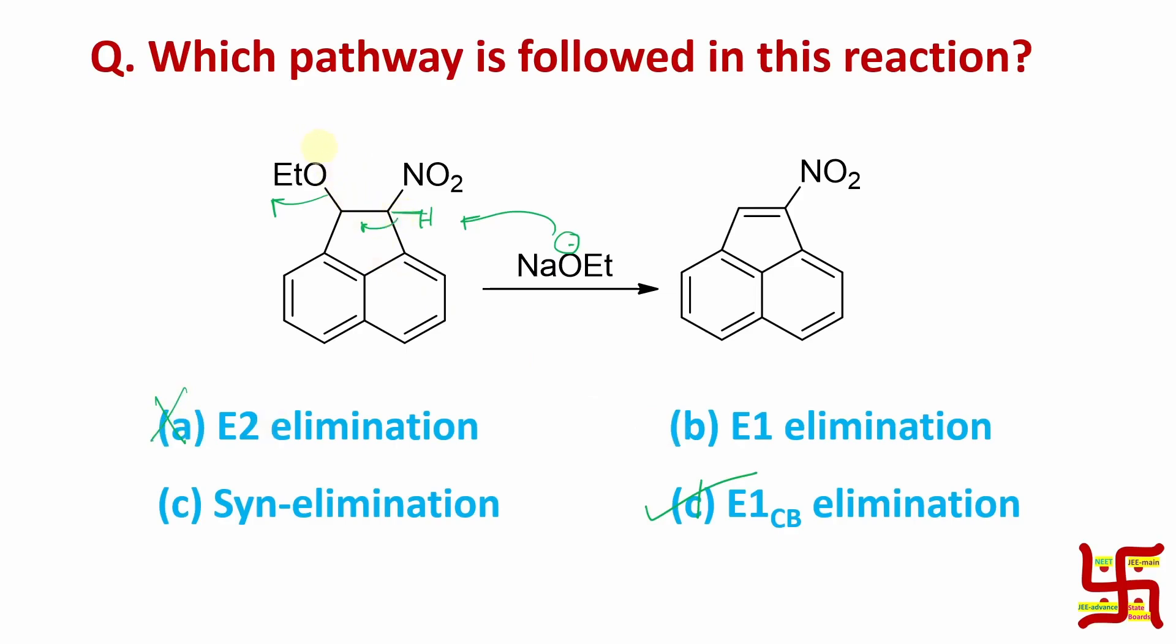E1, for E1, leaving group must be very good, such that it can leave earliest. But here, this ETO cannot leave that much efficiently, because ETO minus is not a good leaving group. For syn elimination, the groups must remain in the same orientation. And if you look at this problem also, little carefully, I haven't shown the geometry accurately based on which you can conclude. And if you look at this bond, in syn elimination, hydrogen and ETO need to be in the same plane. So, that is also not possible. So, this indicates it is the right answer.